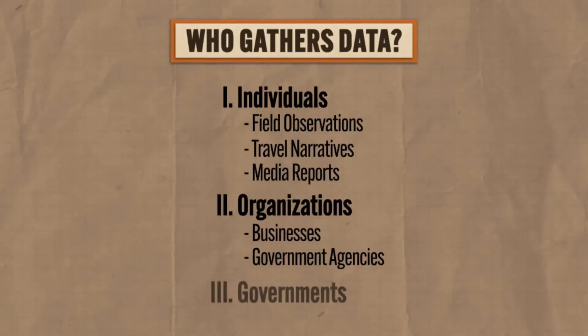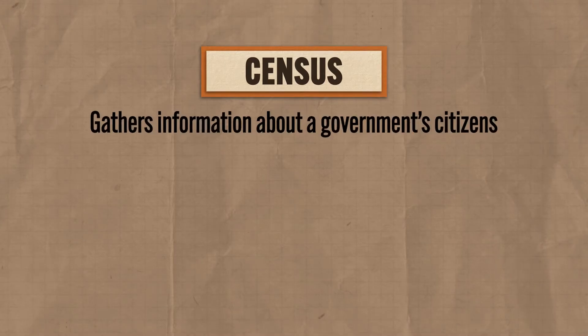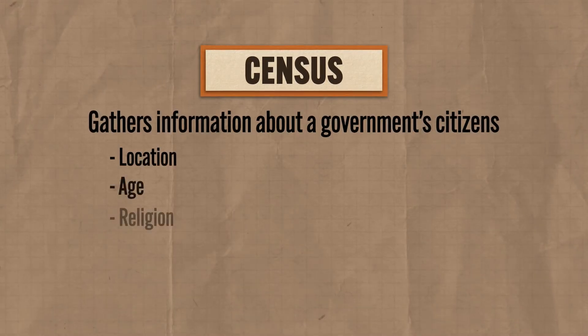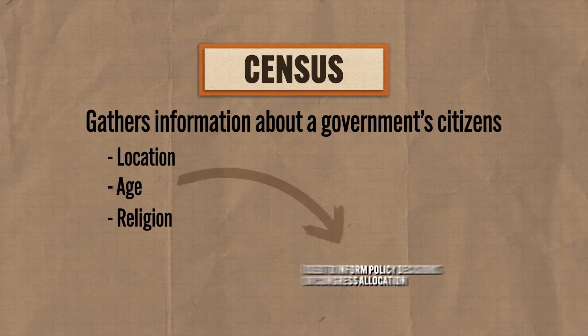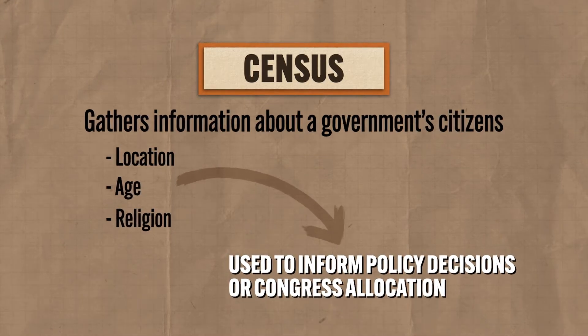But also governments collect geographic data for their own purposes. For example, here in the United States, every ten years the government takes a census which gathers all kinds of information about its citizens like where they live, how old they are, what religion they practice, etc. And then all that data is used to make decisions about policies to pass or how to allocate representatives in Congress, because more or less people in an area means more or less representatives.